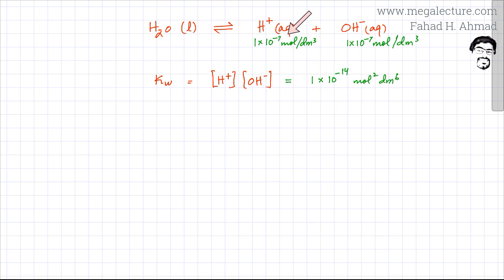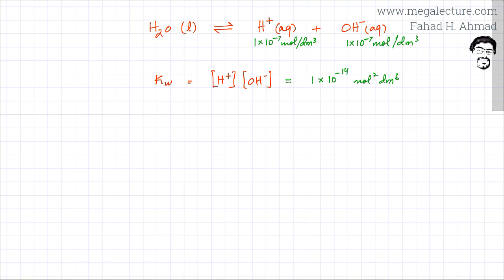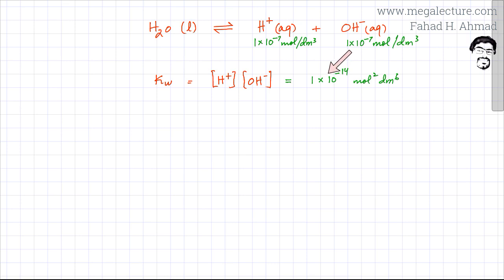The concentration of H⁺ is 1×10⁻⁷ and the concentration of OH⁻ is also exactly the same, giving KW = 1×10⁻¹⁴. This is an equilibrium constant: [H⁺] × [OH⁻]. The value of KW always remains constant — it only changes with temperature; no other changes in concentration or pressure will affect it.